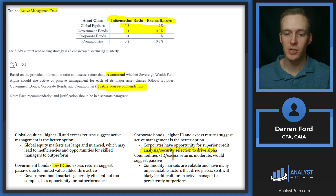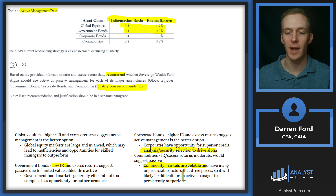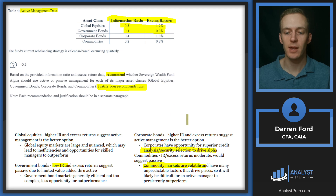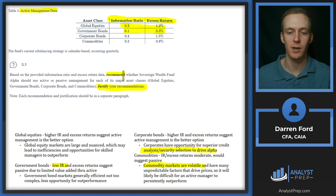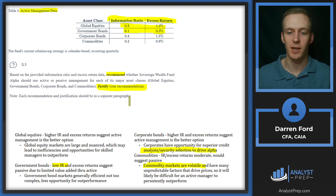Commodities: information ratio and excess returns are moderate; however, we would probably suggest passive due to the volatility of commodity markets. They also have many unpredictable factors that drive prices, making it difficult for an active manager to persistently outperform. A recent real-world example: commodities can be weather-related and very unpredictable. In Africa, there was a drought recently that spiked cocoa prices because they weren't able to harvest as much cocoa for the year, so the idea that an active manager could predict that and profit off it is far-fetched.